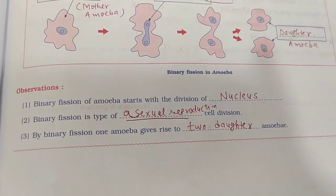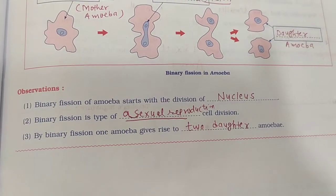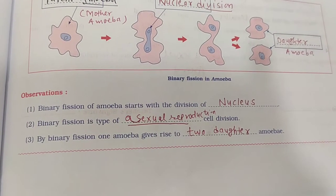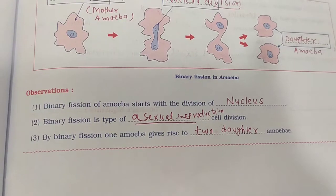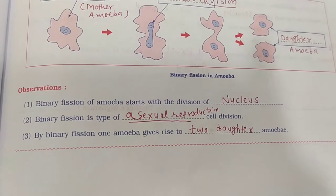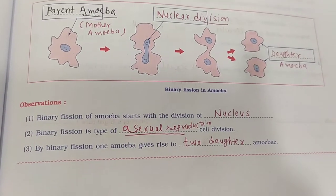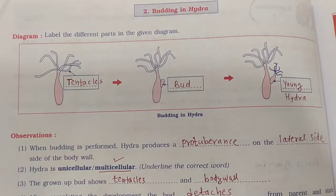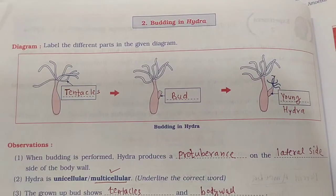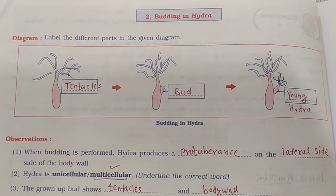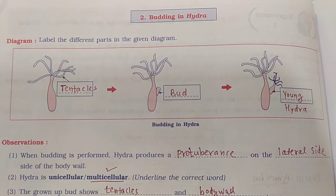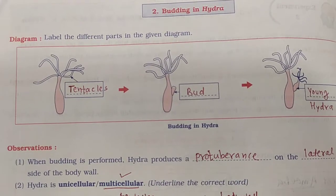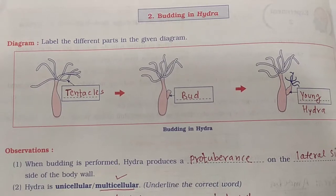Now let's look at the observations. Binary fission of amoeba starts with the division of the nucleus. Binary fission is a type of asexual reproduction involving cell division. By binary fission, one amoeba gives rise to two daughter amoeba.